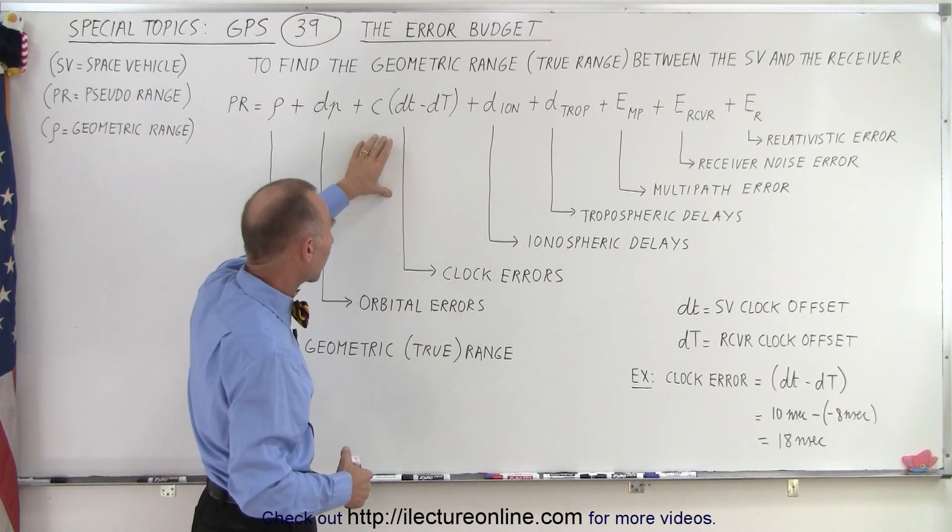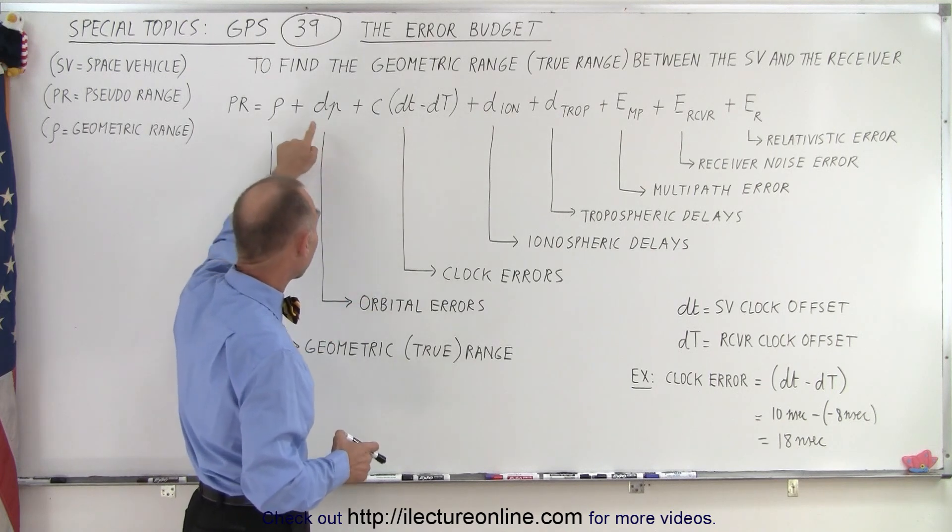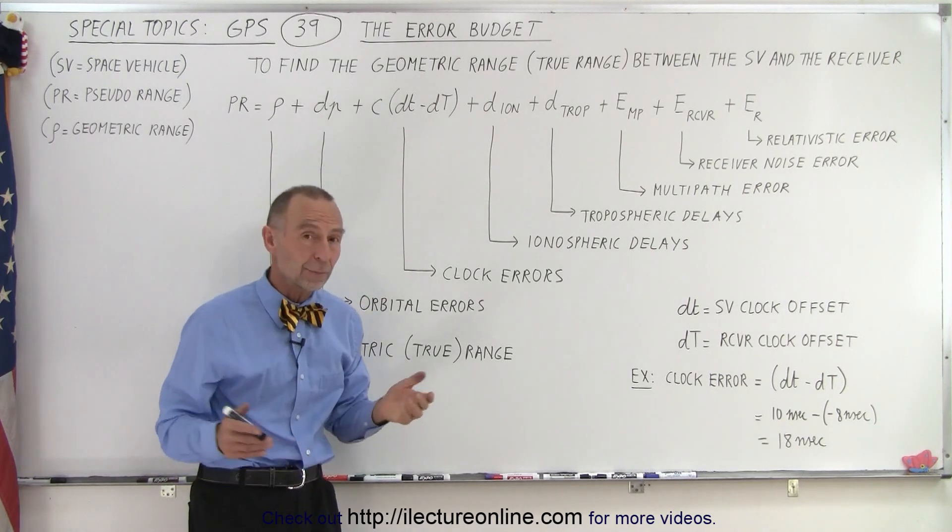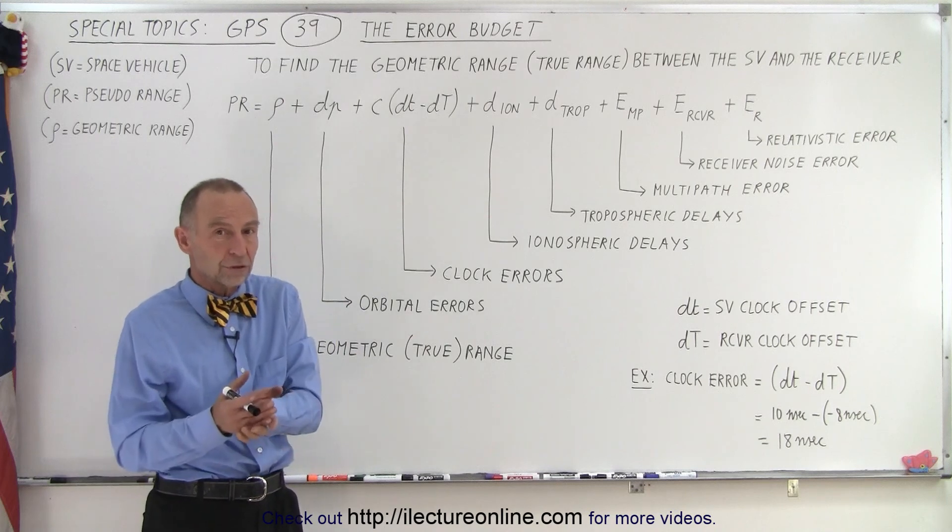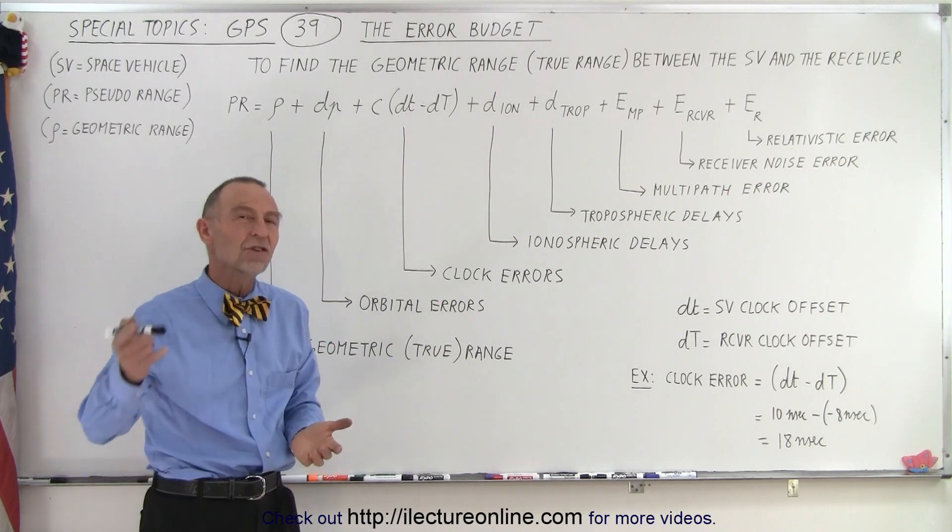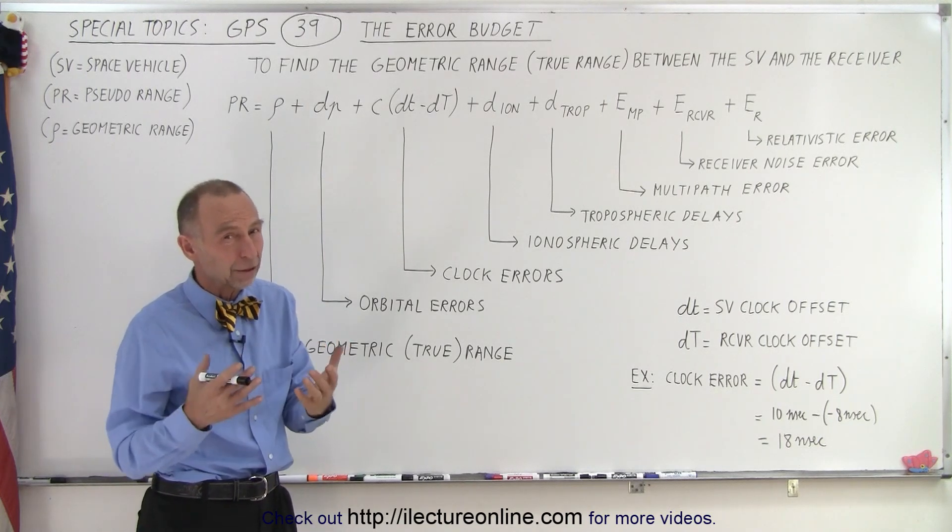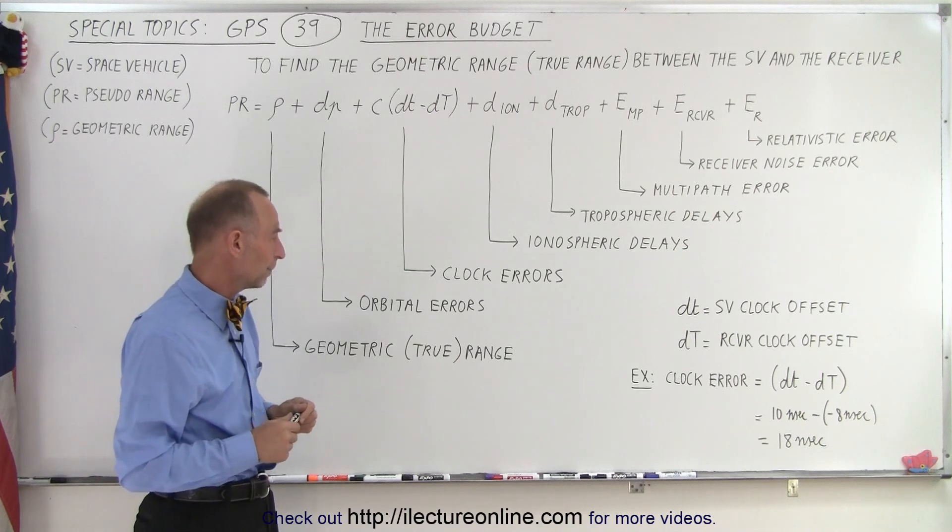Then we have the clock errors. This is usually a very big error, and we have to take care of that. We also have orbital errors, because these orbits aren't perfect circles. They have some ellipticity to them, so there are changes in the position of the satellite relative to the orbit where we expect it to be and where it actually is. We have to account for that as well.